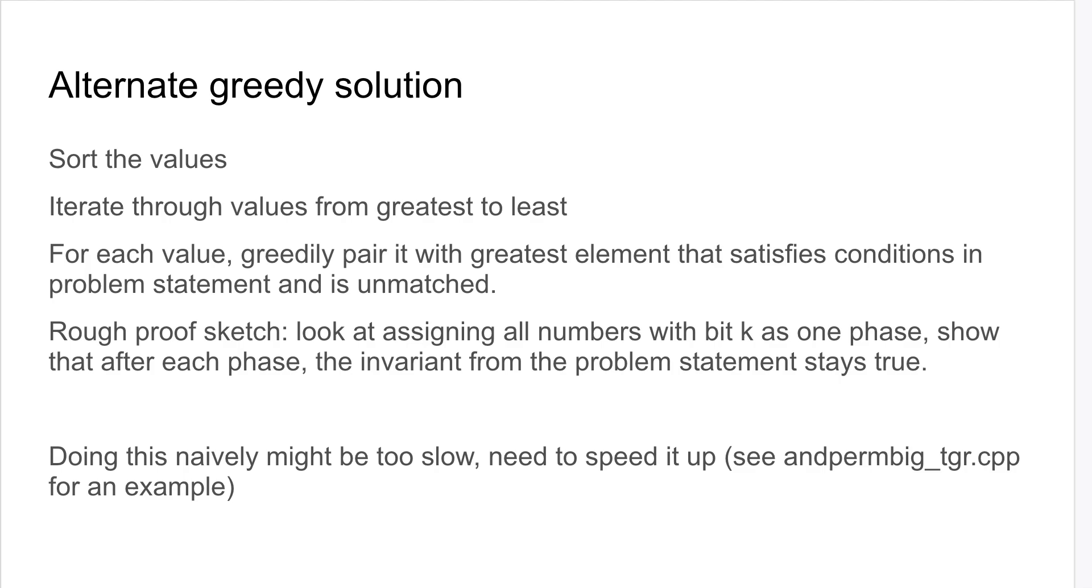The rough proof sketch is very similar to using the trie. You can imagine one phase is like you assign all numbers with bit k as one phase. And then you show that after each phase, the invariant from the problem statement stays true so that you can keep doing this over and over again.